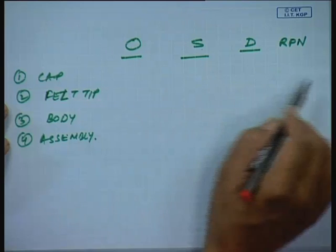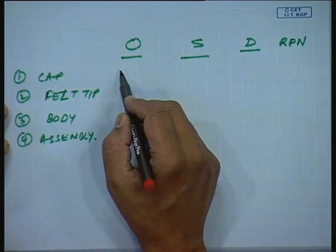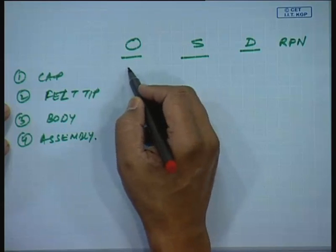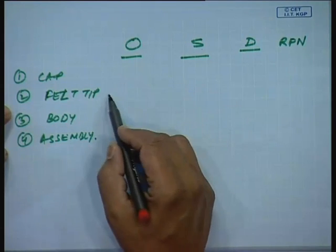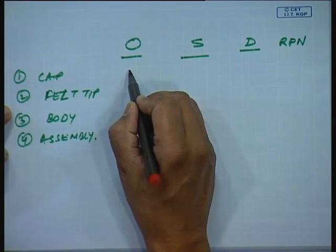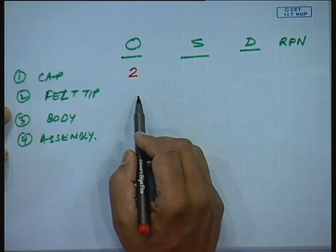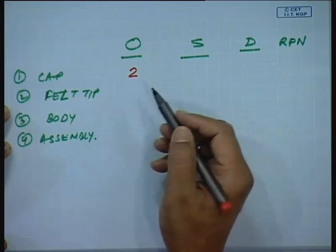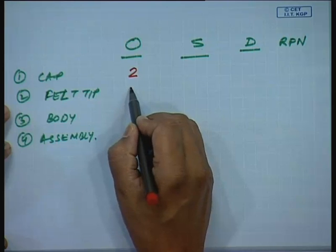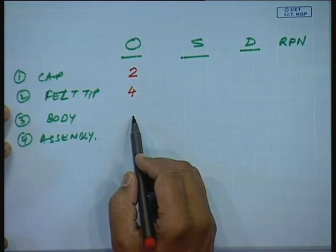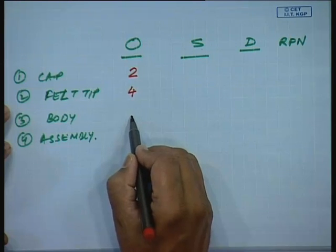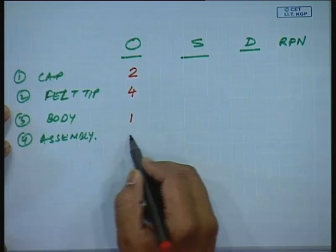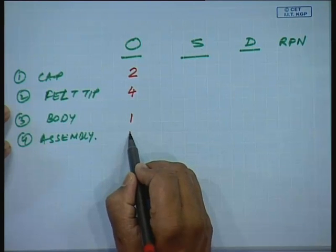For the cap, from a rank of 1 to 10, the failure of the cap — caps are very robust, at most the clip may fail — so I will give it a rank of 2. Felt tip can become dry; this can happen periodically if you have the pen for a long time without use, so occurrence could be 3 or 4. Body of the pen may not fail — there could be an occasional crack — so I will give it a rank of 1. The assembly of the entire pen may become loose and this occurrence is also very low, so I give it rank 2.